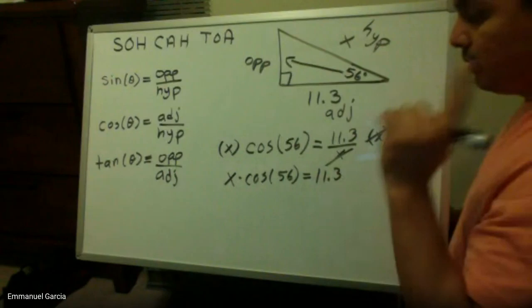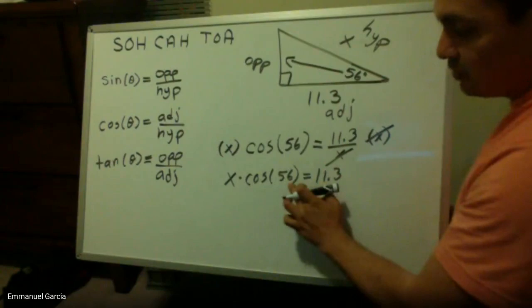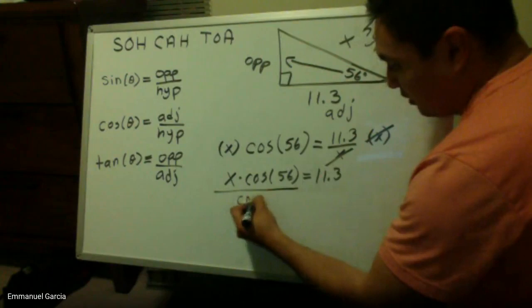But I need my x value by itself so I can find it. So I need to get rid of my cosine of 56 degrees. I don't use the cosine inverse because then I will get rid of the cosine but my 56 will be there so I have to be careful. So what I do, I divide by cosine of 56 degrees.